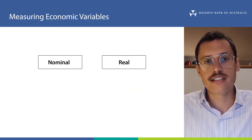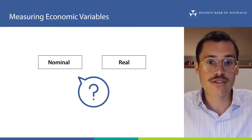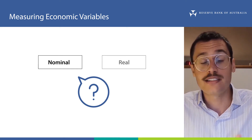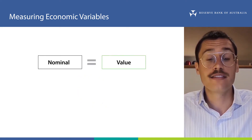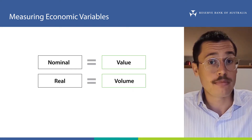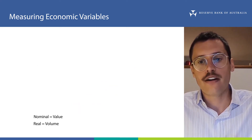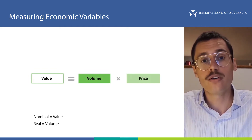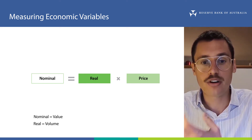Now first, this language can be confusing. What does nominal mean? And if we're not looking at a real measure, does that mean we're looking at a fake measure? Let's translate these words into simpler language. A nominal measure of something is its value at a point in time, whereas a real measure of something is its volume at a point in time. The relationship between value and volume is that value equals volume times price.